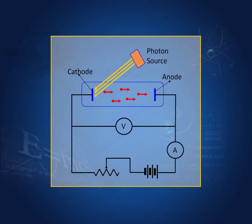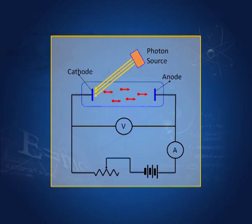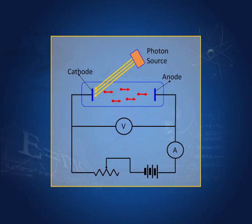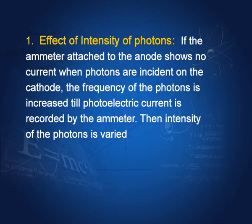There is an arrangement to vary the intensity of the photons. Intensity is the number of photons going through a unit cross section per second — so increasing intensity increases the number of photons, and decreasing it decreases them. There is also an arrangement for varying the frequency of the photons and for varying the potential difference between cathode and anode.